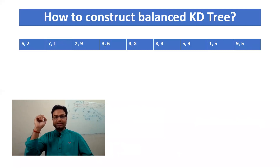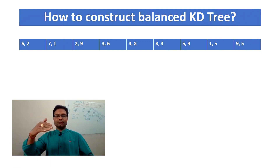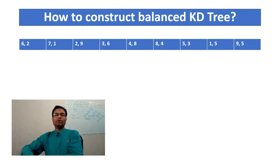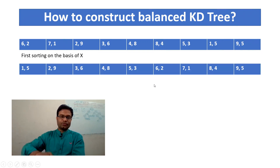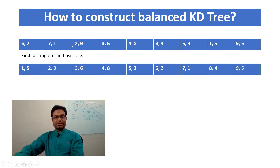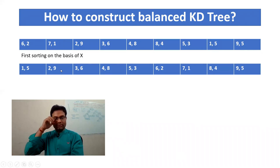To construct the balanced KD-tree, you first sort the data on the basis of x, then y, then x, then y — alternating this way. First, sort on the basis of x. In the data we have values six, seven, two, three, four, eight, five, one, nine — so after sorting on x we get one, two, three, four, five, six, seven.